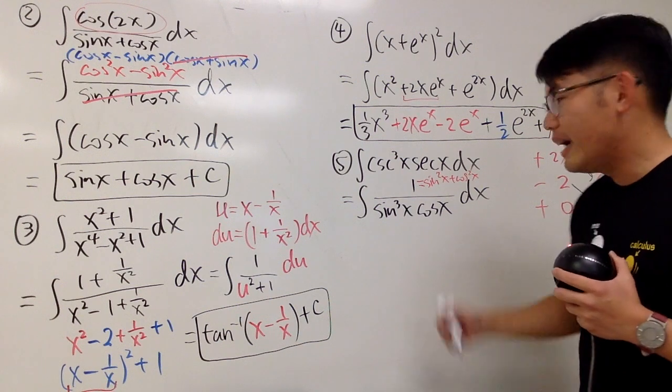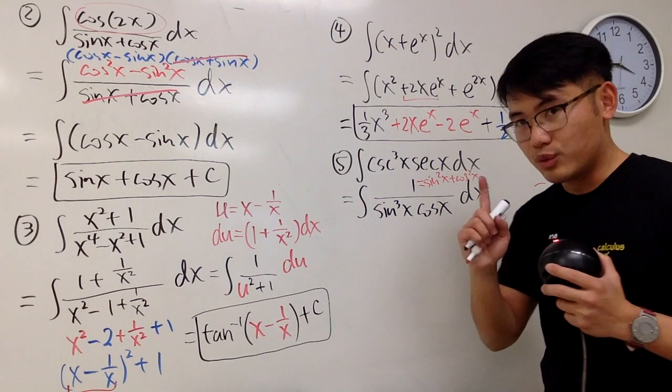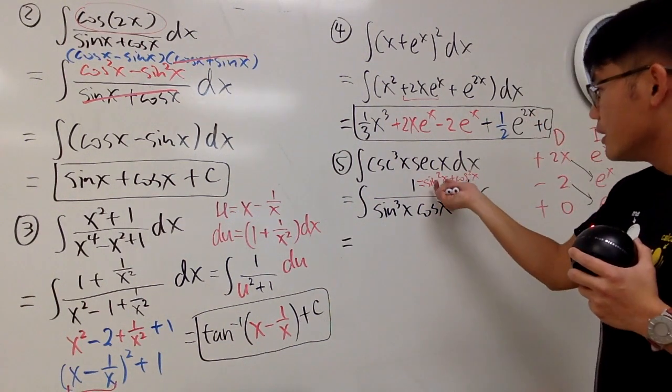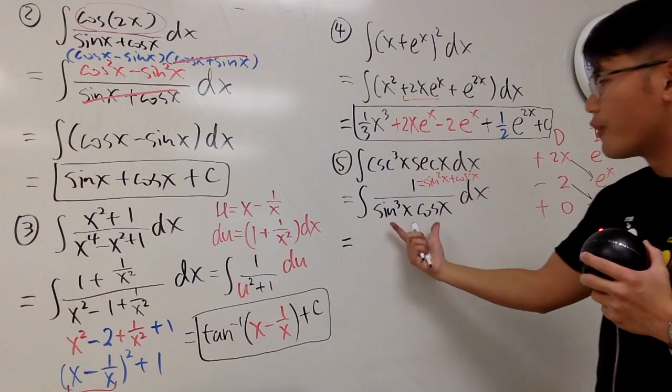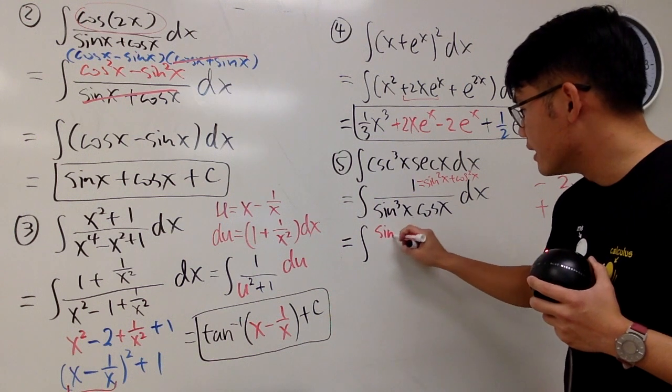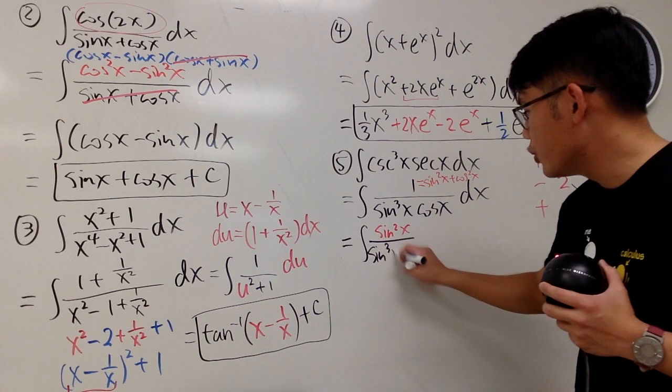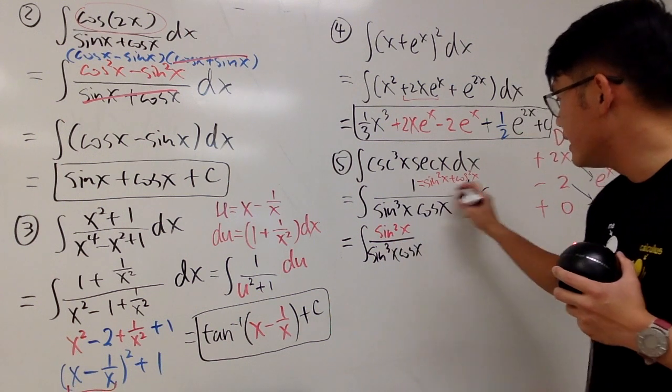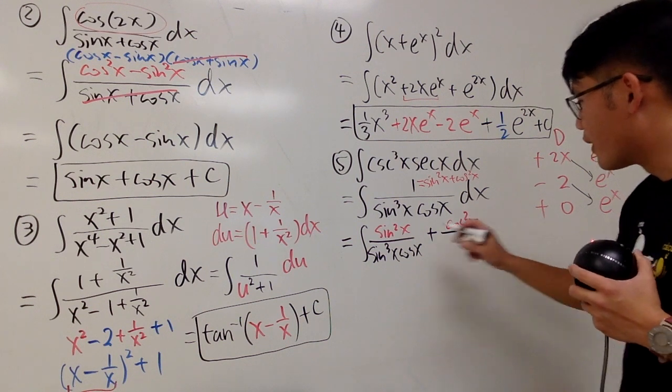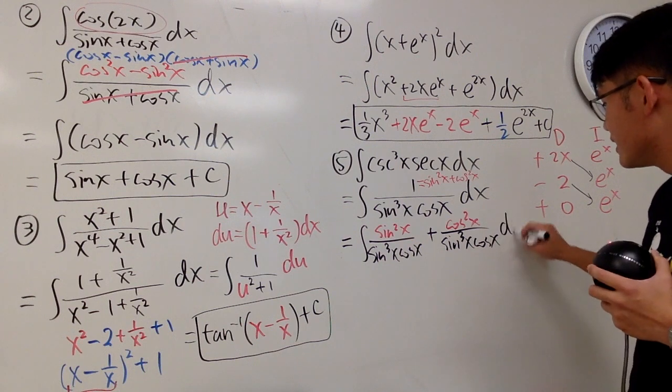And again, the purpose is I want to have more things to work with, and the denominator is just of one term. The beauty of doing so is I can do the first term on the top over that on the bottom, so I'll write this down here for you guys. I will get sine squared x over this denominator, which is sine cubed x cosine x, and then we add cosine squared x over sine cubed x cosine x, like that, dx.